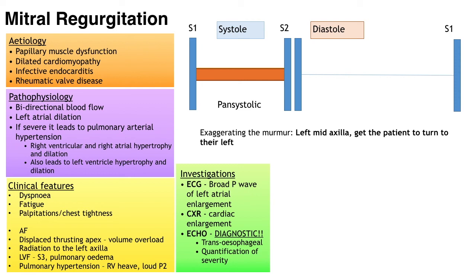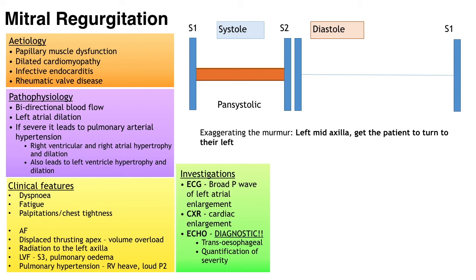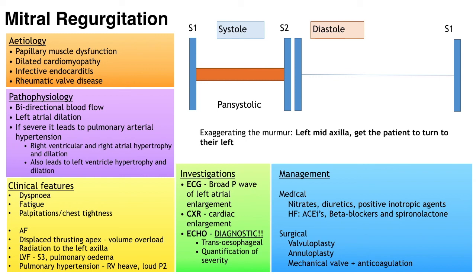On ECG you may see a broad P wave indicating left atrial enlargement, an underlying arrhythmia or current or previous infarction. Chest x-ray may show cardiac enlargement. Echocardiogram is diagnostic — notably a transoesophageal echo is used as it's better for viewing the left atrium. Management: for acute mitral regurgitation, stabilise first with nitrates, diuretics and positive inotrope agents, then surgery for valve replacement or repair. In chronic mitral regurgitation, asymptomatic patients may be put on ACE inhibitors and beta blockers; if ejection fraction is less than 60% or they are symptomatic they will be offered valve replacement or repair.